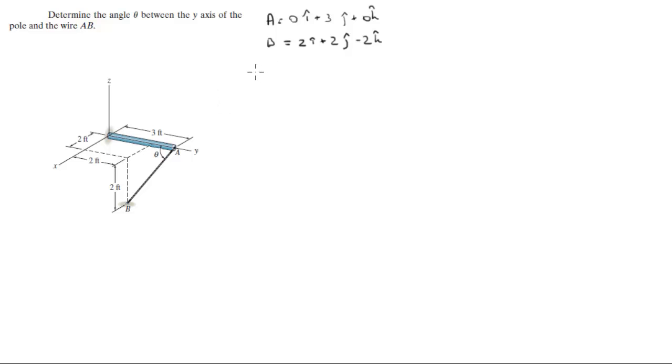So you want to find the vector BA, the vector going from B to A. So that's A position vector minus B position vector, which is equal to negative 2i plus 1j plus 2k.